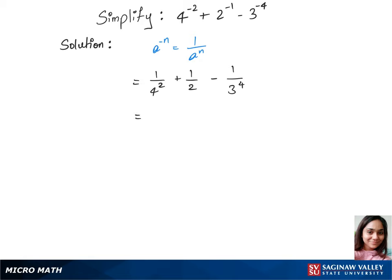Now we can write this as 1 over 4 square is 16, plus let's just keep this as the same, minus 1 over 3 power 4 is 81. Now let's do the LCM for the first two things, and that is 1 over 16.